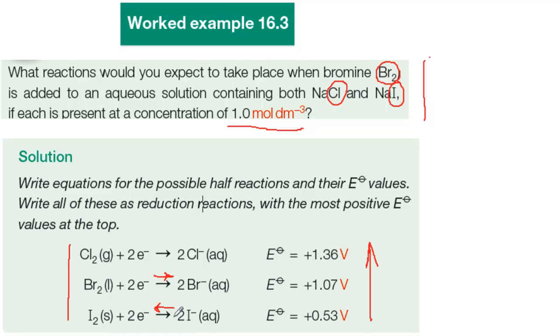Now, with the I- reaction being reversed, the sign of its E standard changes from plus 0.53 volts to minus 0.53 volts. But if you add together the plus 1.07 volts for the bromine half reaction and the minus 0.53 volts for the iodine half reaction, you get plus 0.54 volts. And this positive sign for the overall reaction confirms it will go.